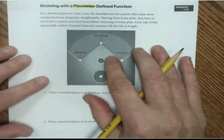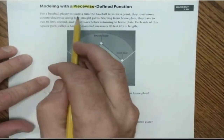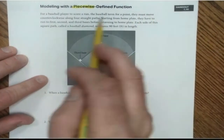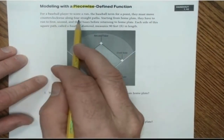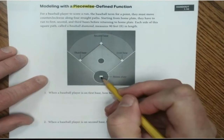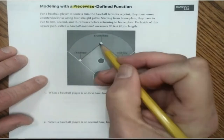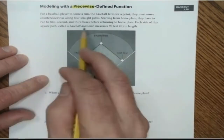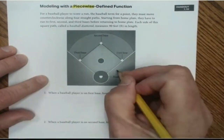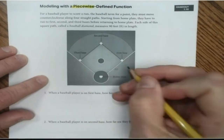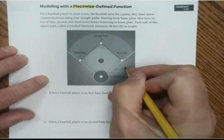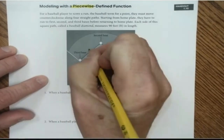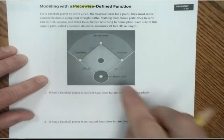Let's use this example. For a baseball player to score a run — the baseball term for a point — they must move counterclockwise among four straight paths: from home plate to first base to second base to third base and back home. Each side of the square path, called the baseball diamond, is 90 feet all the way around.